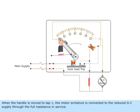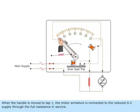When the handle is moved to tap 1, the motor armature is connected to the reduced DC supply through the full resistance in service. At the same time, the shunt field of the motor is also getting the full DC supply.